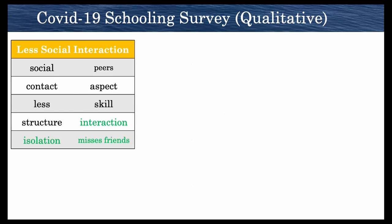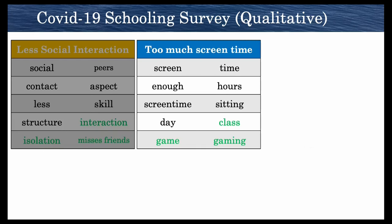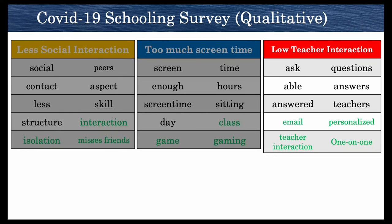Finally, we're going to look at some qualitative results, specifically on the COVID-19 survey data. This survey was about kids' schooling during the pandemic. We can see here seed topic words were black, and green words are words that were added by GTM. So we can see here, less social interaction, too much screen time, and low teacher interaction, which words were added by GTM.